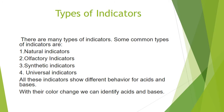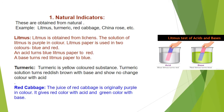There are many types of indicators: natural indicators, olfactory indicators, synthetic indicators, and universal indicators. All of these can be used to find out the acidic or basic nature of any substance, as they give different colors in different acidic or basic media.